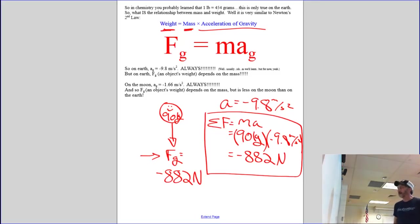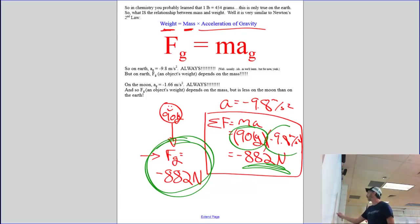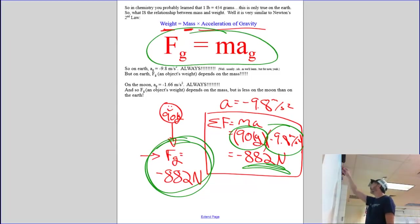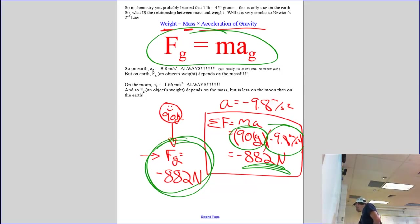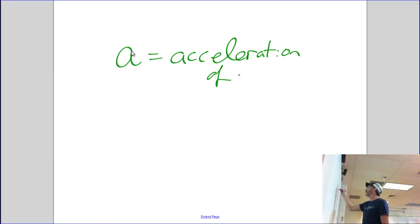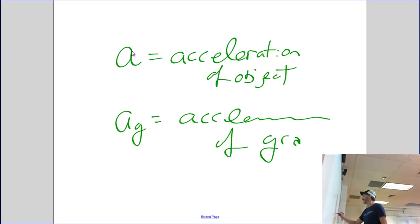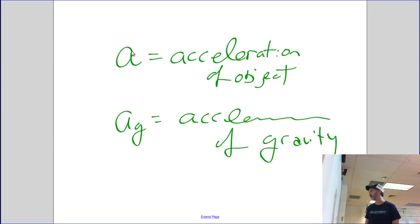Roy doesn't have to be falling for this to be his weight — once he lands, he's still going to weigh just as much. We calculated the 882 by taking the mass and multiplying it by the acceleration he would have if he was falling. So this is how we calculate the force of gravity: take the mass of the object and multiply it by the acceleration of gravity wherever you are. Be careful — there are two accelerations: A, which is the actual acceleration of the object, and Ag, which is the acceleration of gravity. Right now my acceleration is zero, but the acceleration of gravity where I'm at is still negative 9.8 meters per second squared.